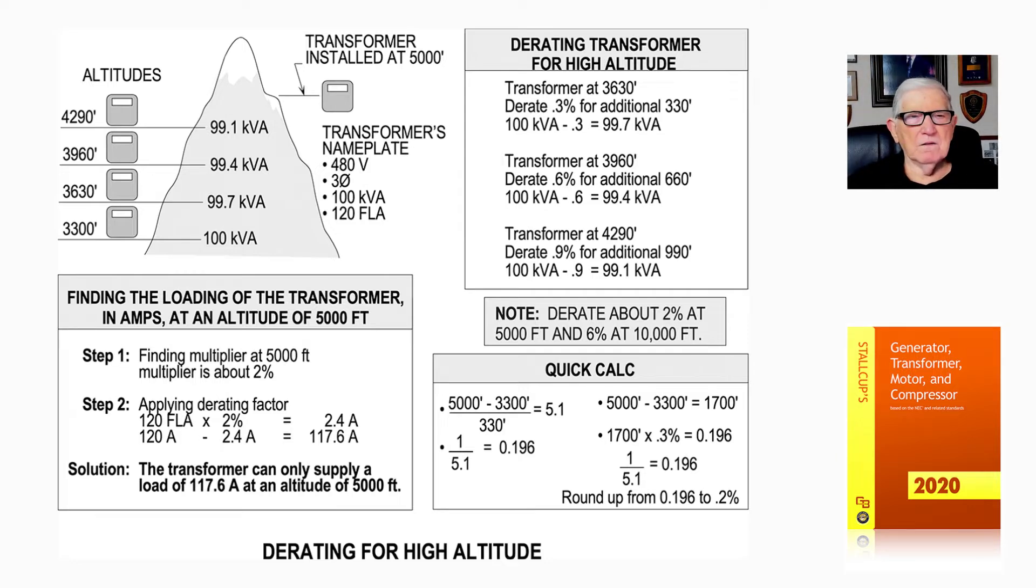At 4,290 feet it would be approximately 99.1 kVA. At 3,960 feet it would be approximately 99.4 kVA. At 3,300 feet it would be approximately 100 kVA. You're going to get the max amount at 3,300 feet and below.